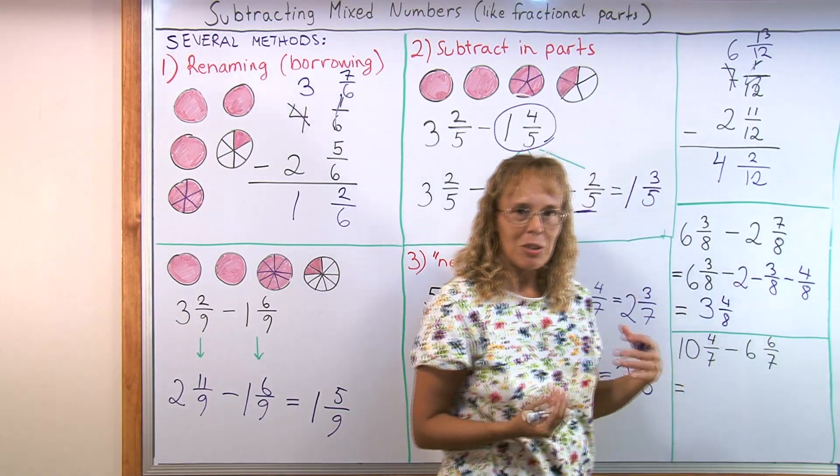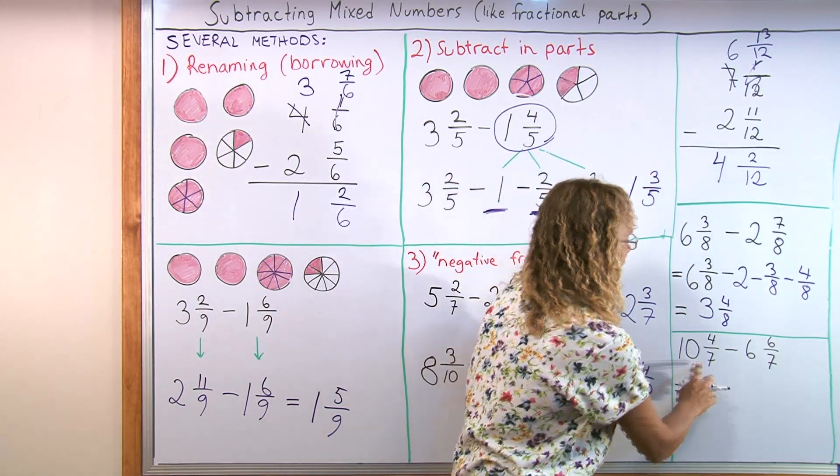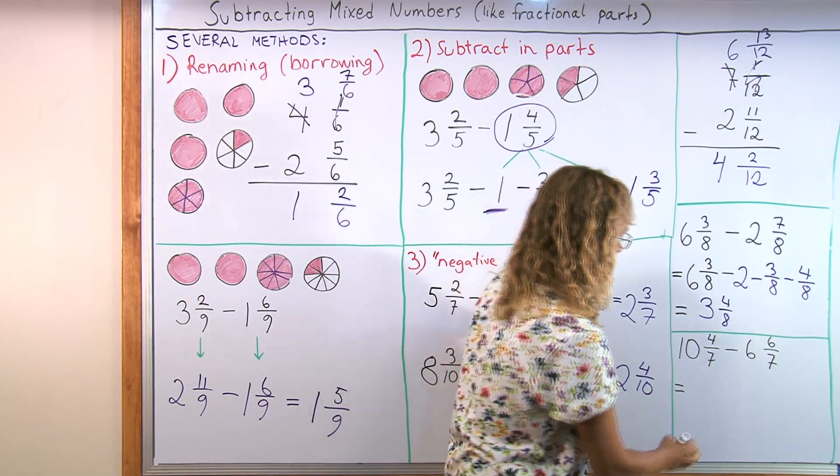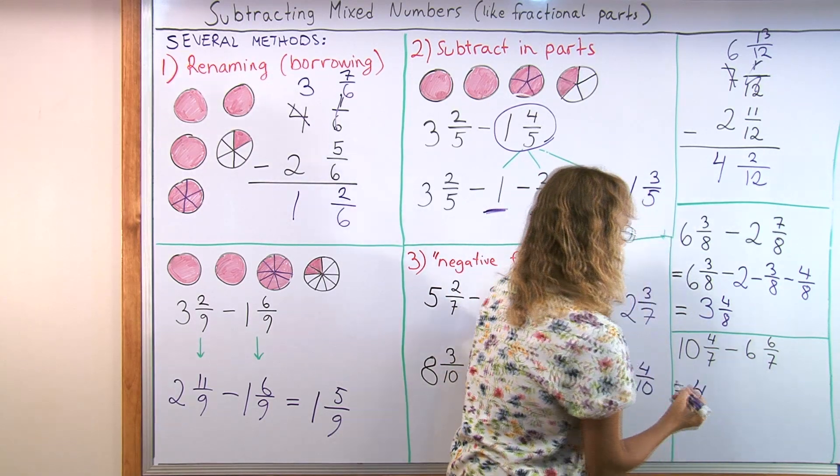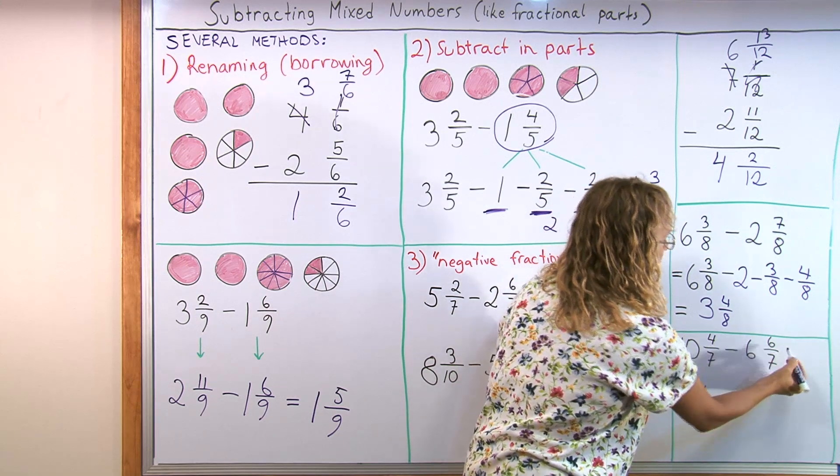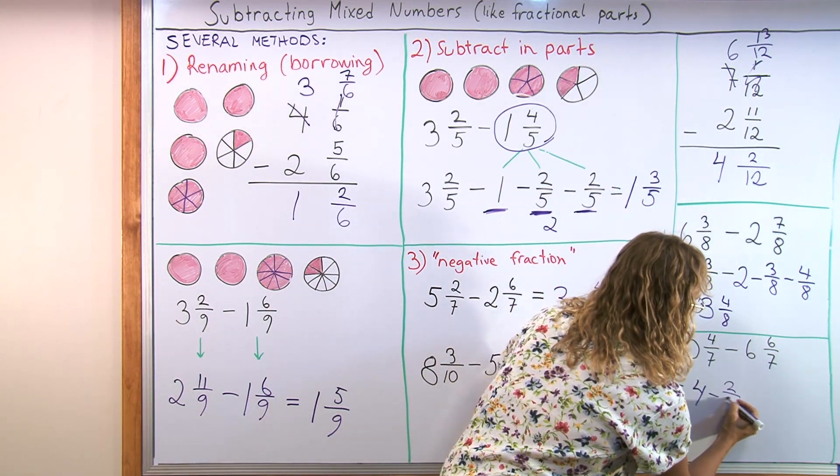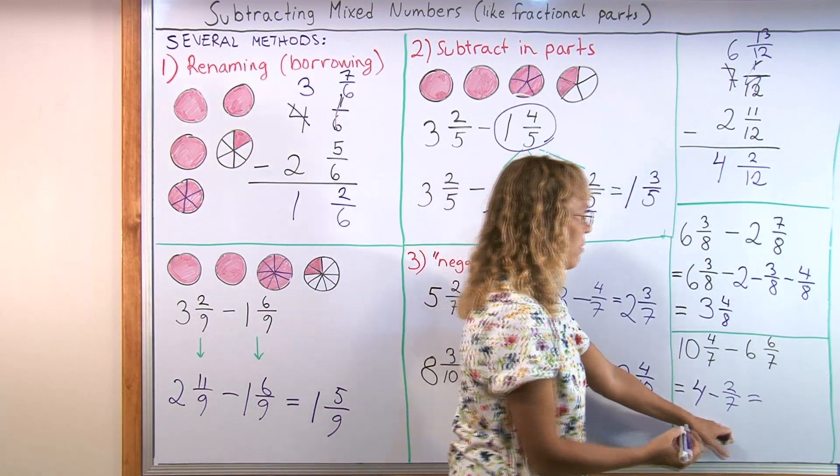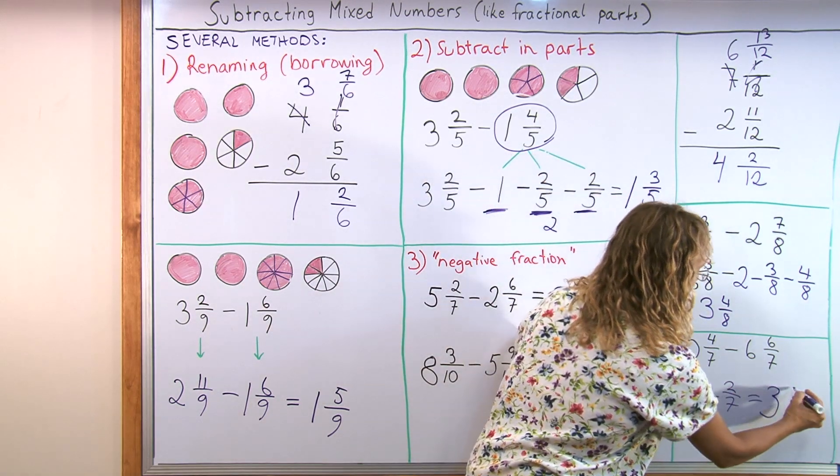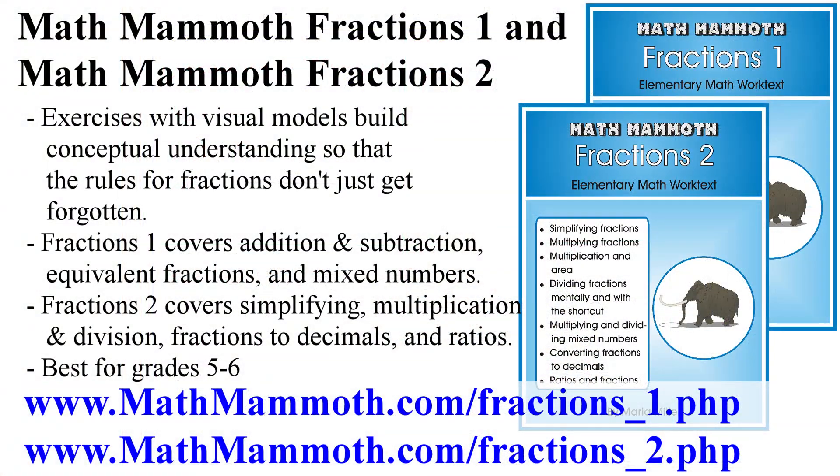And lastly the idea where we use the negative fraction. I just go 10 minus 6. And that is 4. And then in the fractional part 4 take away 6 is going to be negative 2/7. And now I subtract these. So I will be left with 3 whole pies and 5/7. And now I just check with my head.